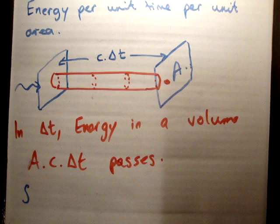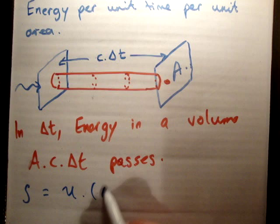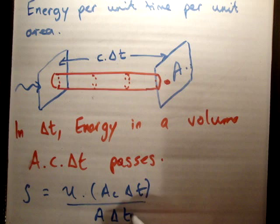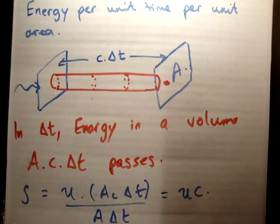So what we need to do is multiply first of all by the energy density. So the energy density is u times A c delta t. And we need to get it per unit area, so we need to divide across by A delta t. And that's going to be equal to uc, which is the energy density times the speed of light.